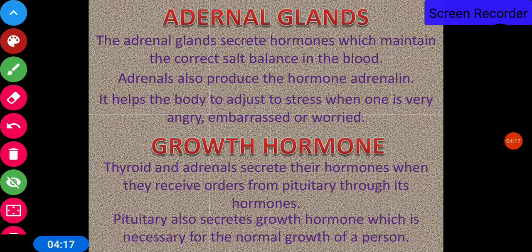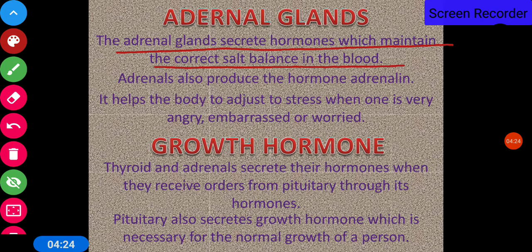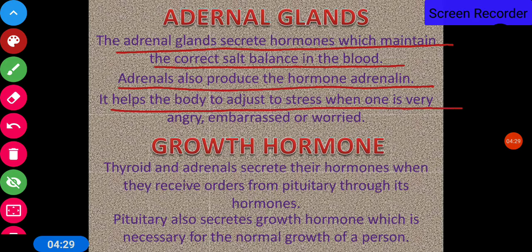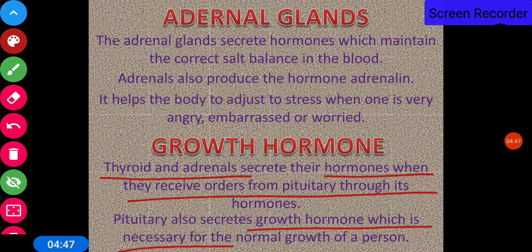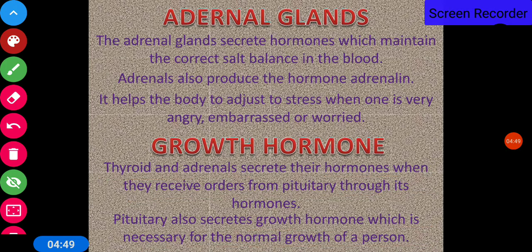The adrenal gland produces hormones which maintain the correct salt balance in the blood. The adrenal gland also produces the hormone adrenaline, which helps the body adjust to stress when one is very angry, embarrassed, or worried. The thyroid and adrenal glands secrete their hormones when they receive orders from the pituitary through its hormone. The pituitary also secretes growth hormone, which is necessary for the normal growth of a person.